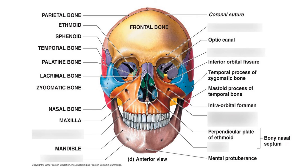Here we see the optic canal, and this is the superior orbital fissure — not marked here, but that is your superior orbital fissure. And then this is your inferior orbital fissure. Looking at this view, this is the perpendicular plate of the ethmoid bone coming up, and this is the superior nasal concha of the ethmoid bone. This is the inferior nasal concha. This is the mental foramen, and this is the superior orbital foramen.